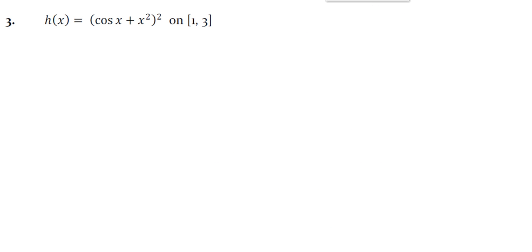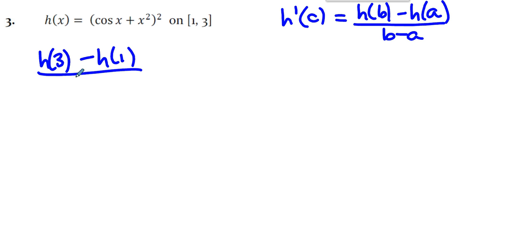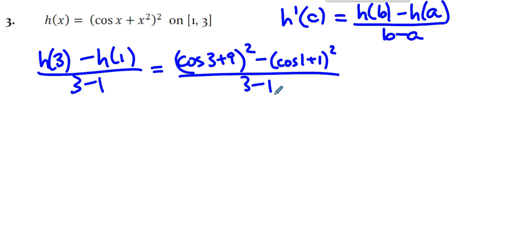The third question was by far the most complicated. We're looking to find the value of c for which h prime of c is h of b minus h of a over b minus a. And so in this case, we're looking for h of 3 minus h of 1 over 3 minus 1. So you can substitute in, you substitute the 3, you substitute the 1 over 3 minus 1.